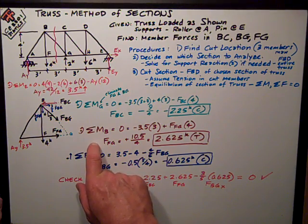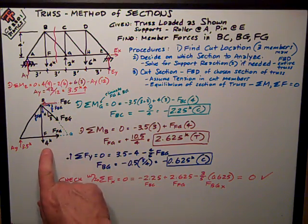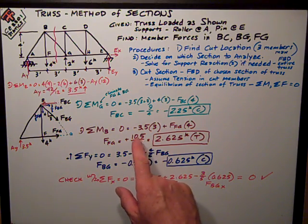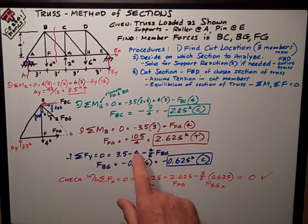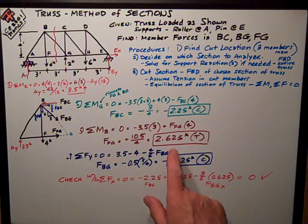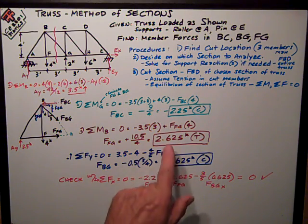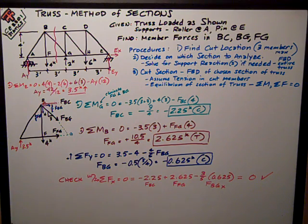Next one I want to find another point that has the intersection of two forces, and once again that's B, because that eliminates BC and BG, and it eliminates this 4-kip force. So I've got negative 3.5 times 3, and FG times 4. Do the math. I get positive 2.625 tension, positive, like I assumed. So FFG is tension, 2.65.